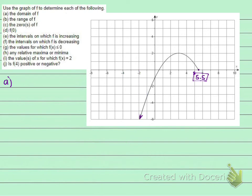So my domain is going to be everything from negative infinity to 5.5. It's all my x values from negative infinity to 5.5. Infinity and negative infinity always gets a parenthesis in interval notation, always. And 5.5, since it is a closed circle and the graph does actually hit there at 5.5, I'm going to use a bracket.